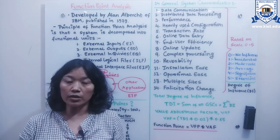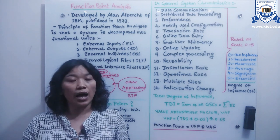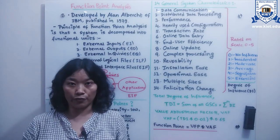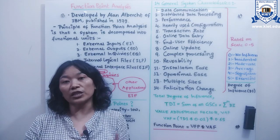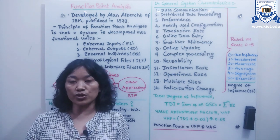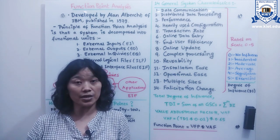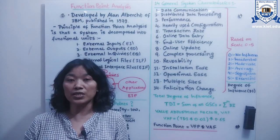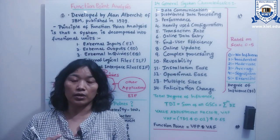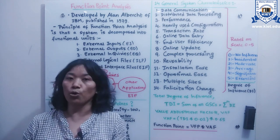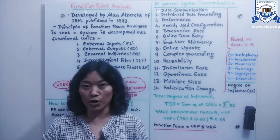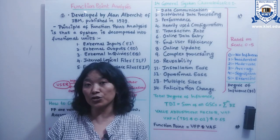Lines of code means we count the number of lines used in any application and on that basis estimate the size of the software. But this methodology won't be very effective because it may vary from one programming language to another. For example, a program written in C may take four or five lines, while the same task in Python can be done in one or two lines. So on the basis of lines of code, we cannot accurately estimate the size or complexity of the software.